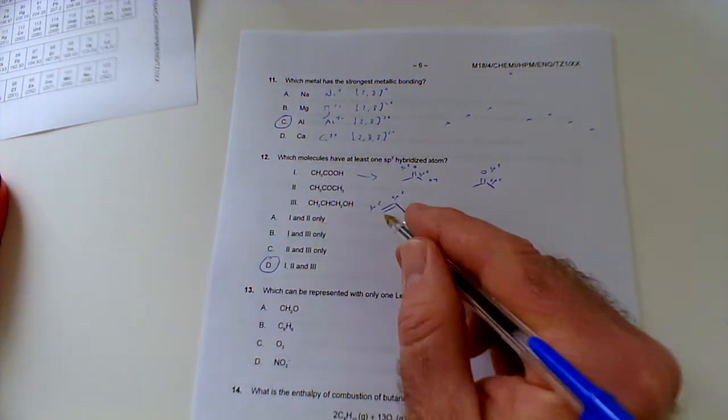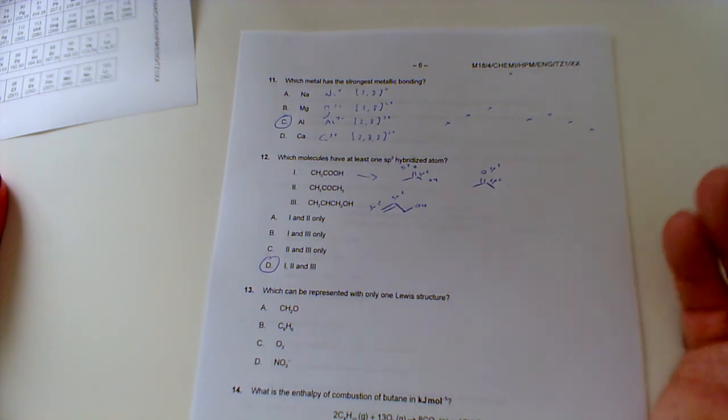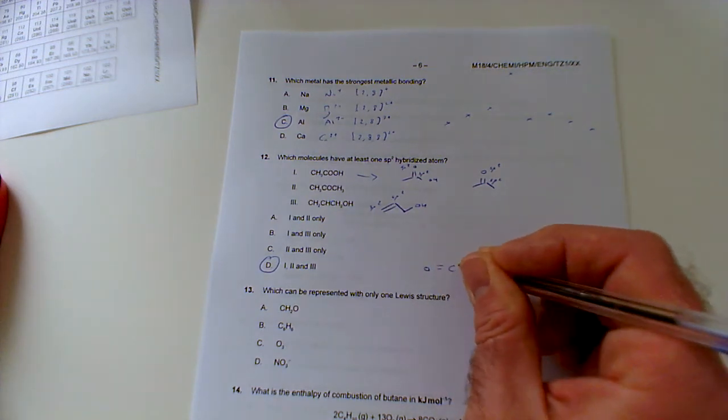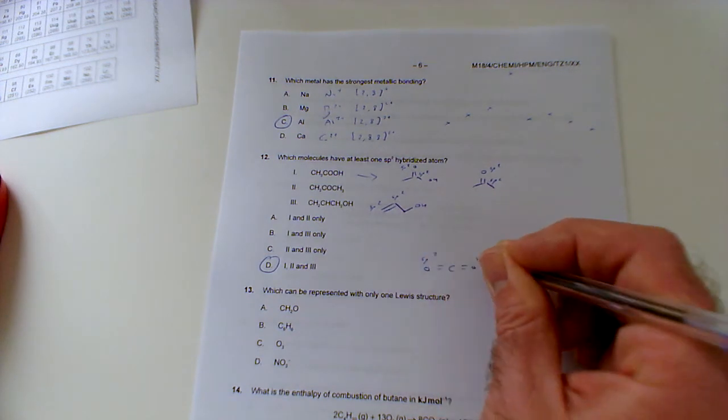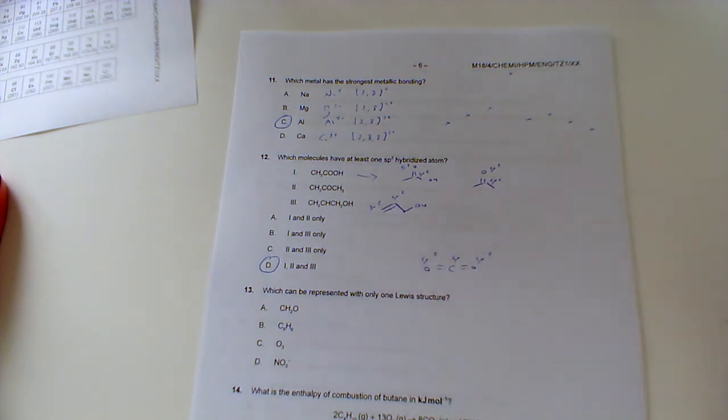So it's actually all three of them, so it'll be one, two, and three all together. Just think when you see a double bond think sp2. There are exceptions like carbon dioxide. Because this carbon's actually got two double bonds, yes the oxygens are sp2, but the carbon is actually sp because having two double bonds is like having a triple bond.